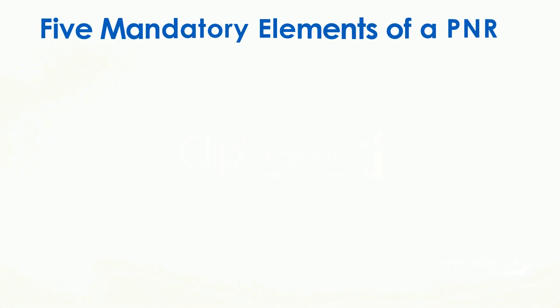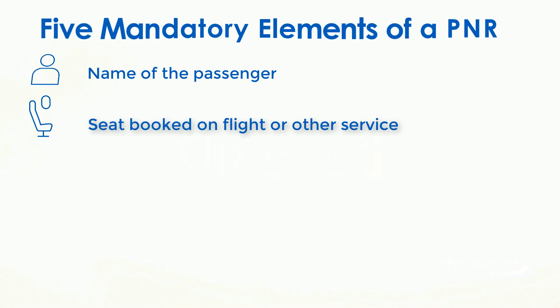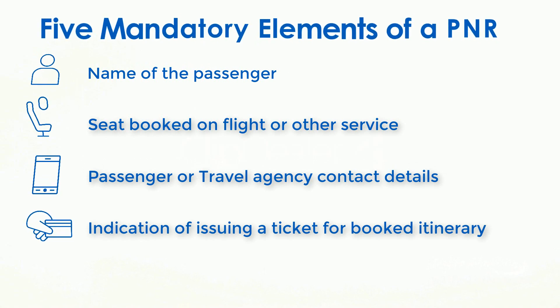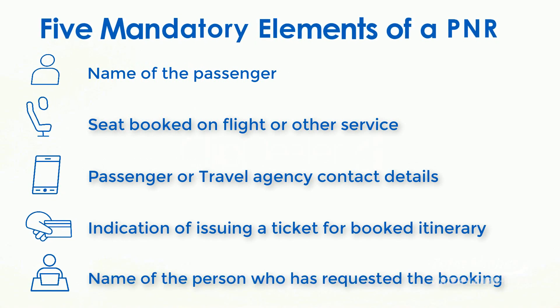There are five mandatory elements that must be entered to create a PNR. These are: name of passenger, seat booked on a flight or other service known as a segment, passenger or travel agency contact details, indication of issuing ticket for the booked itinerary, and name of the person who has requested the booking.